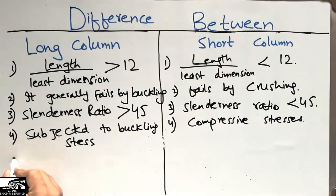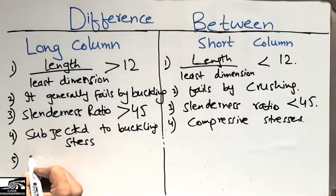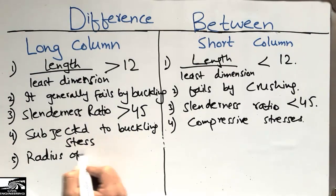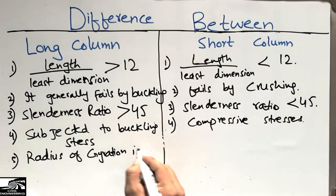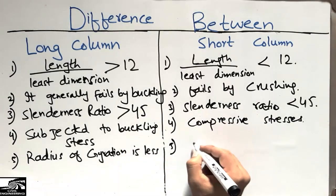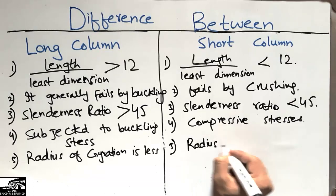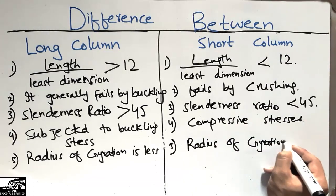The fifth difference between these two columns is the radius of gyration. The radius of gyration of a long column is always less, while in the case of the short column, the radius of gyration is always more.